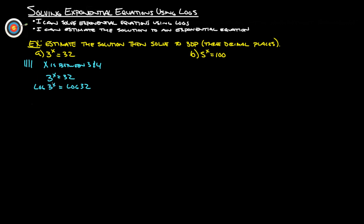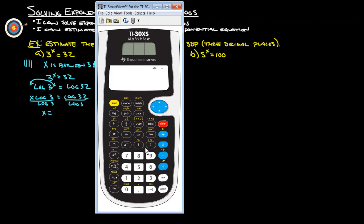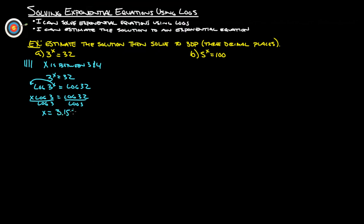Now, we did that because whenever you take the log of something, this x gets to come out front. So really, this is x log 3 equals log 32. If we want to get x by itself, we divide both sides by log 3, and we get that x equals log 32 divided by log 3. So bring out our calculator, log 32 equals, divide by log 3, and we get 3.155 to 3 decimal places. Which fits our estimation because we knew it was between 3 and 4.